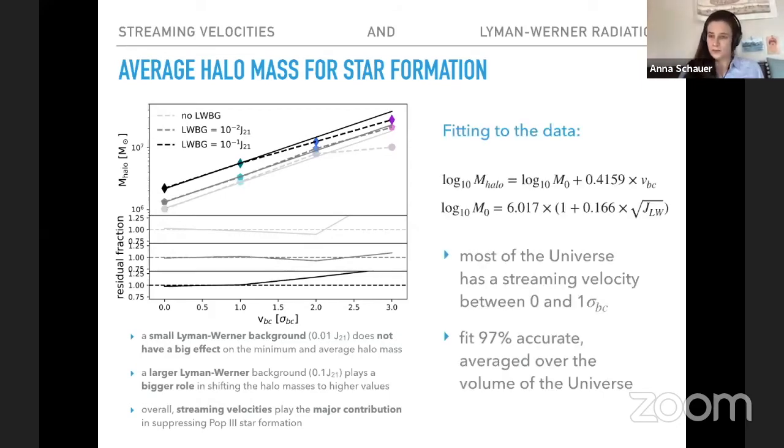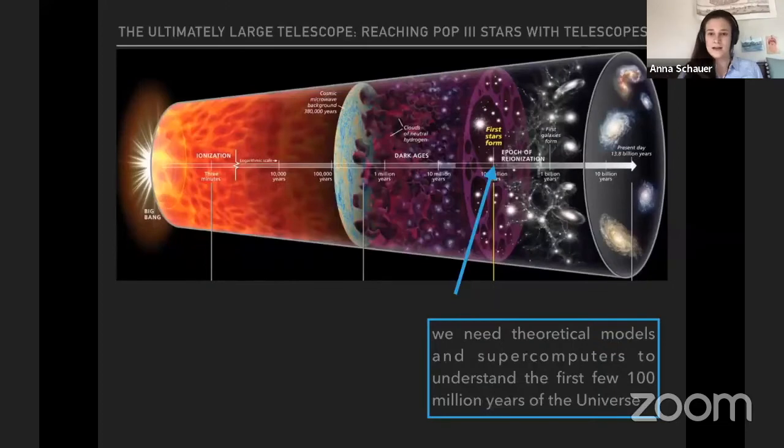And in order to characterize not only those 12 combinations, we applied a fitting formula and it works very nicely because most of the universe has a streaming velocity between zero and one sigma. So when we take that into account, we can fit roughly 97% of the universe accurately based on those models with our fitting formula.